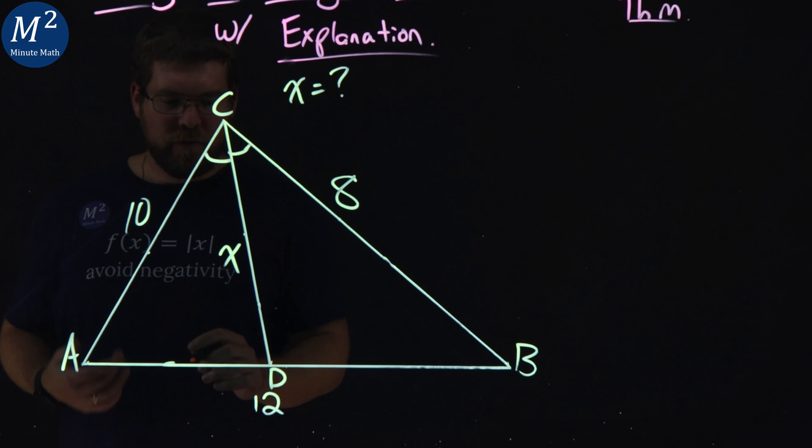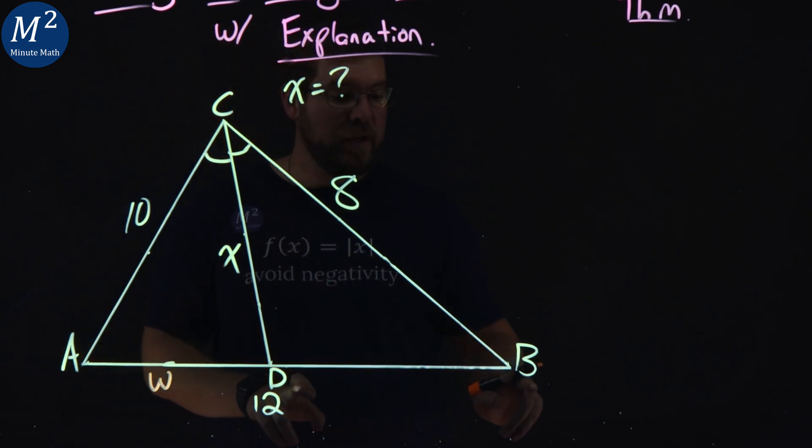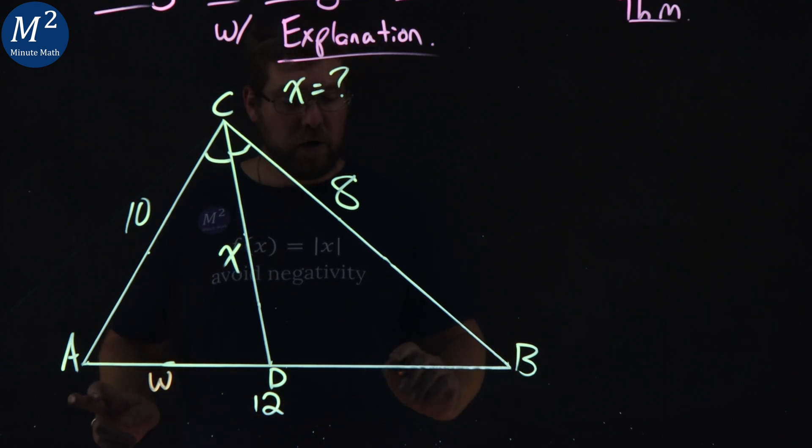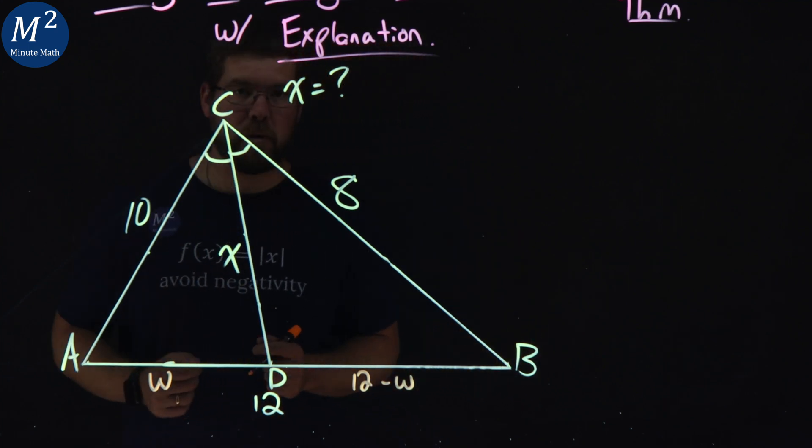So if I call the length of AD to be w, and then the length from DB would have to be the length of 12 minus that length of w, whatever that length is here.